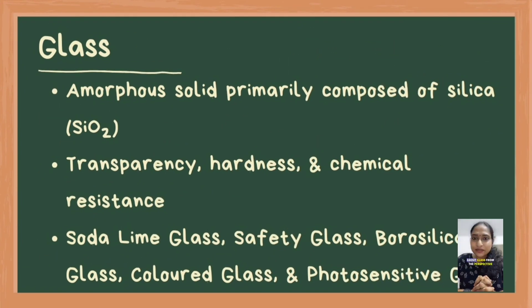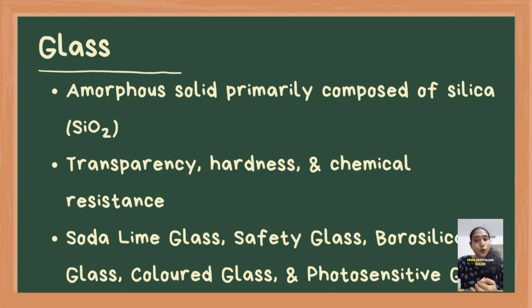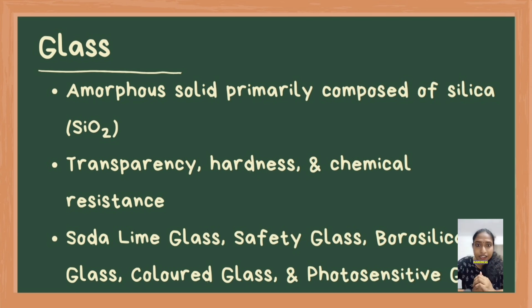Today we are going to discuss about glass. From the perspective of the chemistry of materials, glass is an amorphous solid primarily composed of silica (SiO2) that lacks a long-range crystalline structure, distinguishing it from crystalline solids. It is formed by rapidly cooling molten materials to prevent the formation of a regular lattice structure, resulting in a rigid non-crystalline material. The specific properties of glass such as transparency, hardness and chemical resistance can be tailored by varying its chemical composition, making it a versatile material widely used in various industrial and everyday applications.